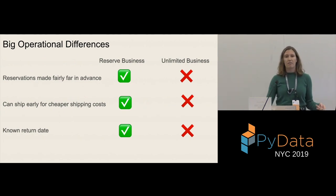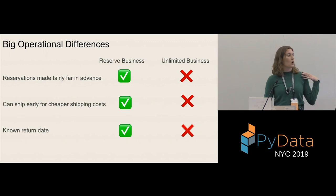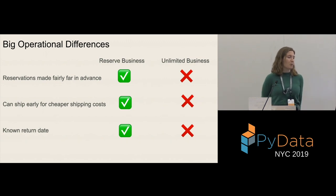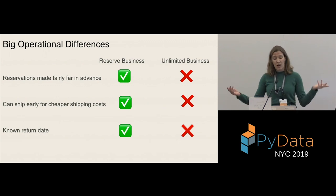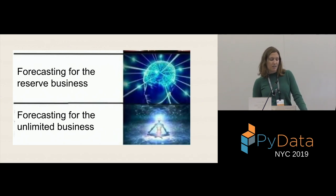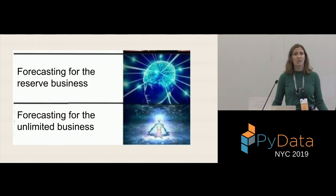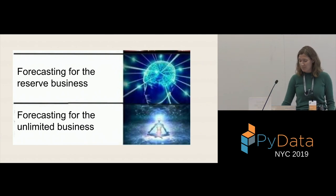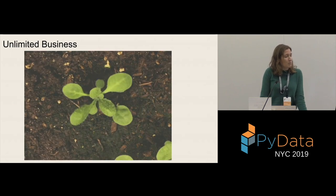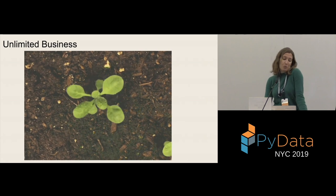You can probably gather that these two businesses have very different operations. For reservations, they're not made in advance — all our reservations come in on the same day. We can't ship things out early for cheaper shipping costs. For our subscription we've got to send it by air if you're outside of our two-day ground shipping zone. We also have no known return date, so we don't really know when these pieces of clothing are going to come back to us. Forecasting on a SKU level for the reserve business is relatively hard, but forecasting for the unlimited business is extremely difficult. But we're willing to deal with that complexity because this business is growing a lot.